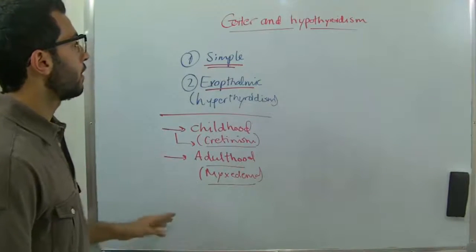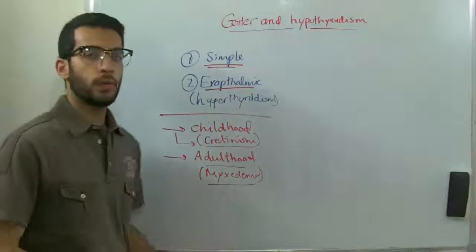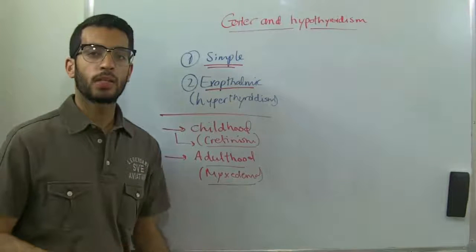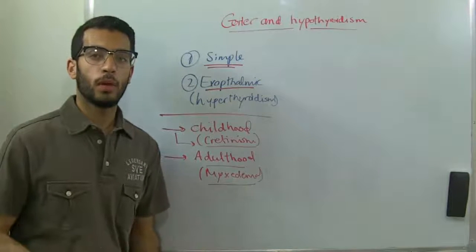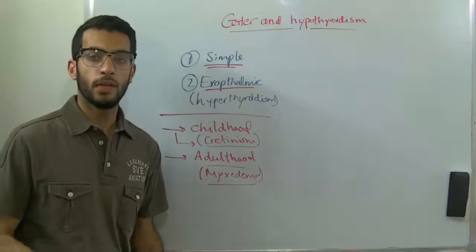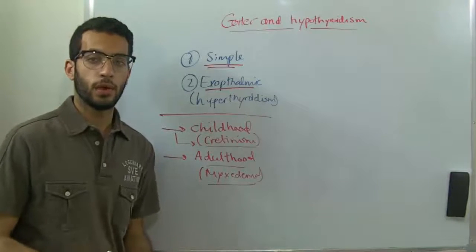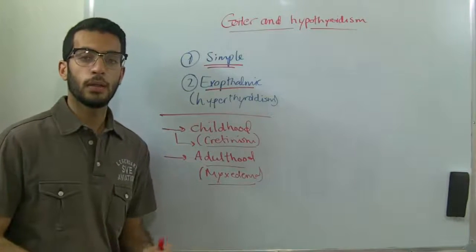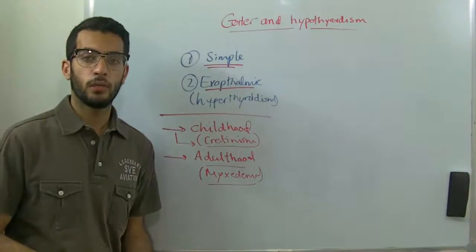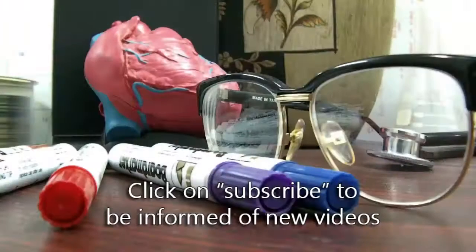These were the types of Goiter and Hypothyroidism. Next time we will talk about the parathyroid glands, which are associated glands to the thyroid gland. Thank you for watching and see you.